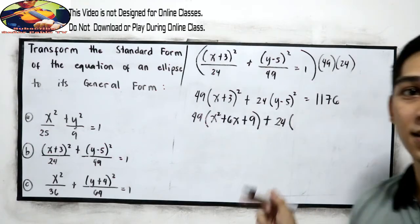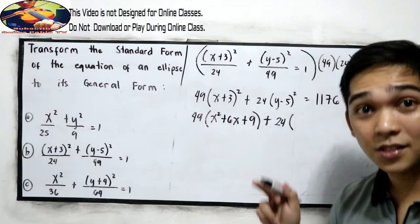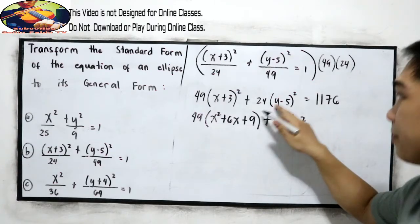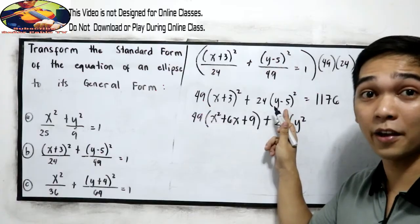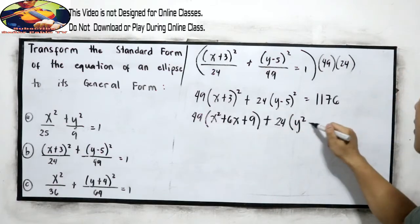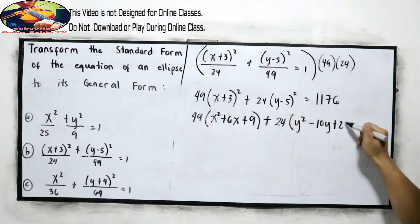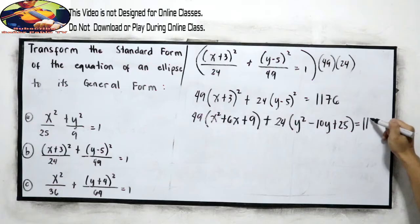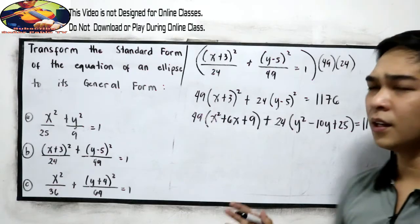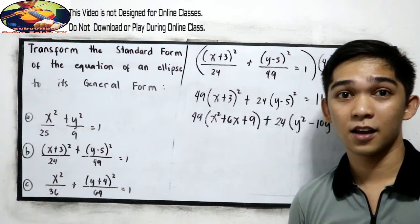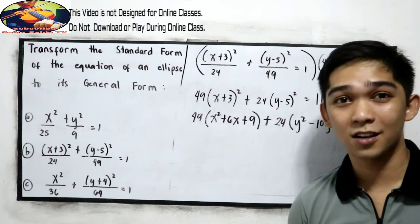Plus 24, expand, square the first term, that is y squared, multiply the first term and the second term, negative 5y times 2, negative 10y. Then square the second term, 5 squared, 25 is equal to 1,176. If you want to master these special products, go to our grade 8 playlist and watch our lesson 1, these special products.